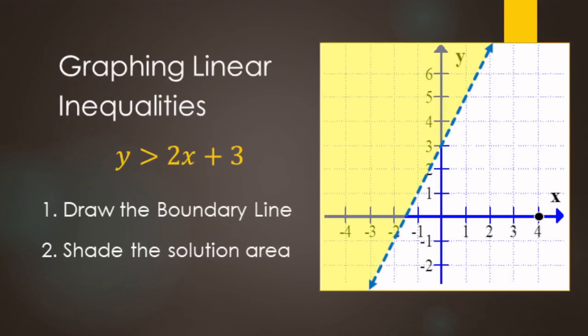To recap: when graphing linear inequalities, start with the boundary line. If it's strictly less than or greater than, use a dashed line. If it's or equal to, use a solid line. Then shade the solution area — shade above the line for greater than, and shade below the line for less than.